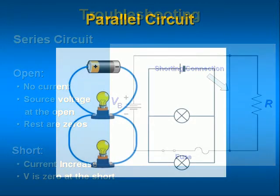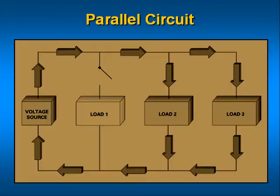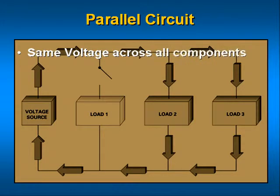Parallel circuits are different than series circuits. In parallel circuits, the same voltage is across all of the components. Each circuit that is tied in parallel is called a branch. A branch may contain one or more components, such as one, two, or more resistors that are in series in that branch.